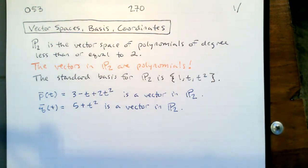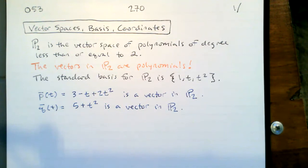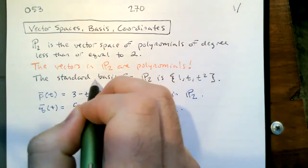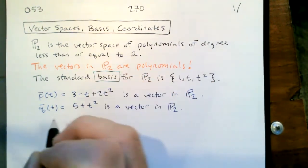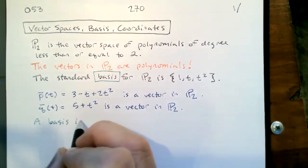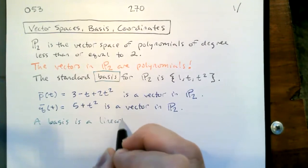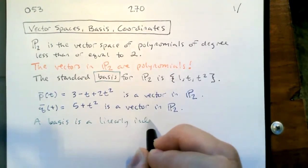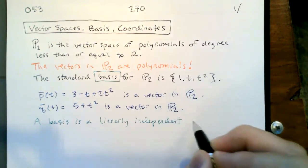Things in P2 look like C + Bt + At². So the vectors in P2 are polynomials. The standard basis for P2 is {1, t, t²}. Remember what we want from a basis: we want a linearly independent spanning set.